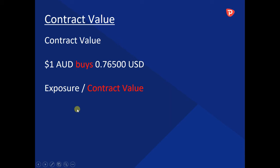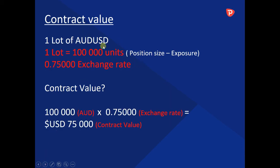Let's put it into real terms and go through the calculation together. 1 lot of Australian dollar against the US dollar — 1 lot is 100,000 units, and this is your position or exposure. 0.765 is your exchange rate. So what would be the contract value? Well, 100,000 — your position size or exposure — times the exchange rate gives you a contract value of 76,500 US dollars.